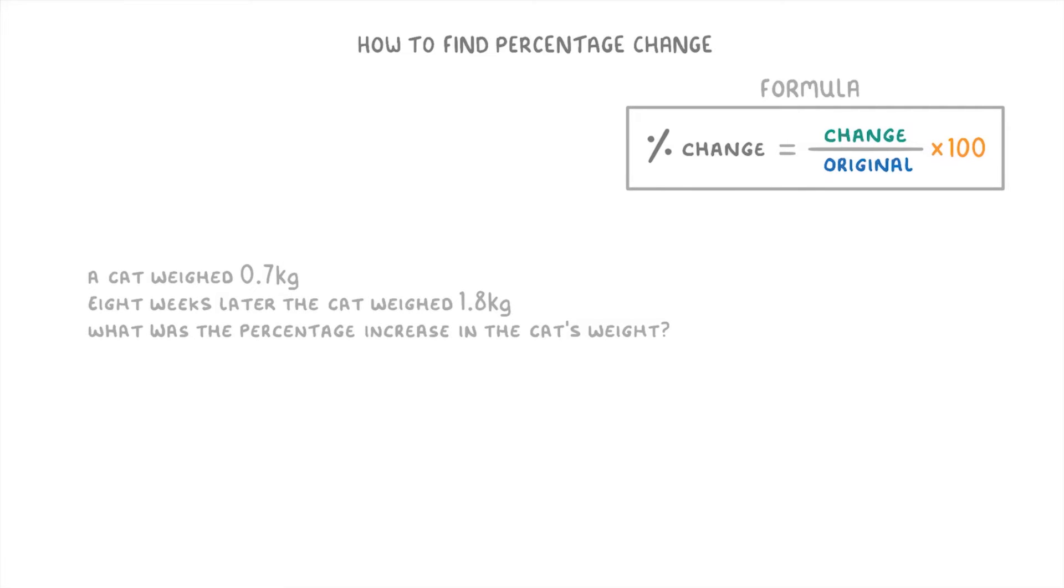Have a go at this last one. So this time, we're told that a cat starts off weighing 0.7kg. Then 8 weeks later, it weighs 1.8kg. And we need to calculate the percentage increase in the cat's weight.